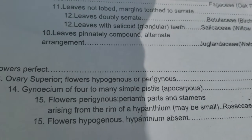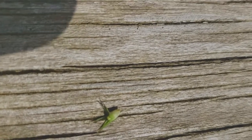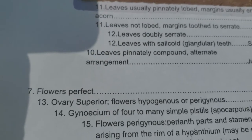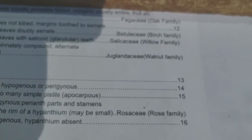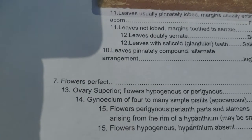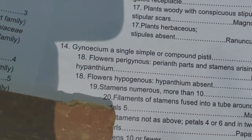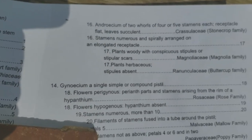Step 13: ovary is superior, flower is hypogynous or perigynous. The parts are attached below where the ovary is — not over the top of the ovary — so the ovary is superior, meaning it's basically above everything else in that part of the flower. Hypogynous or perigynous takes us to 14. Gynoecium of four to many simple pistils (apocarpous), or gynoecium in a simple or compound pistil. One thing you can look for is the stigma and the style.